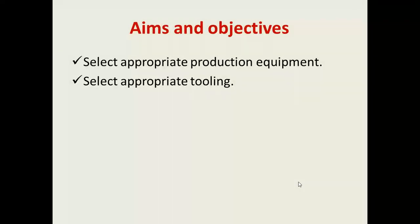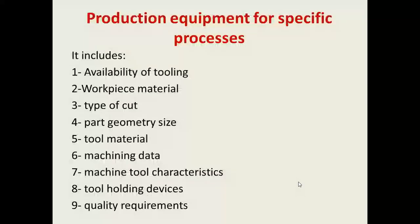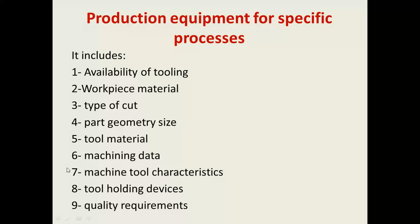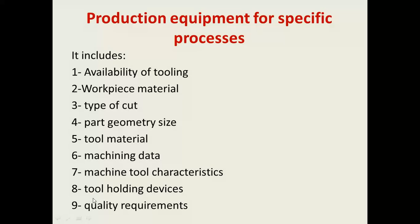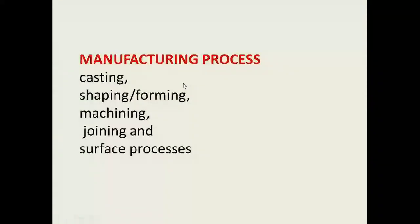The aims and objectives are to select appropriate production equipment and appropriate tooling for specific processes. Nine process factors are available for selecting production equipment: number one, availability of tooling; number two, workpiece material; number three, type of cut; number four, part geometry and size; number five, tool material; number six, machining data; number seven, machining tool characteristics; number eight, tool holding devices; number nine, quality requirements. Based on these, we can select the appropriate production equipment.